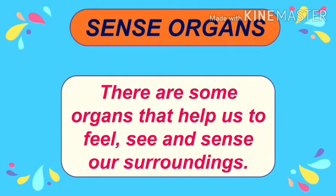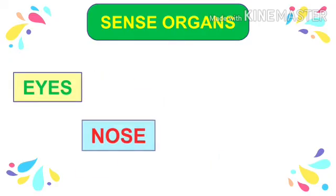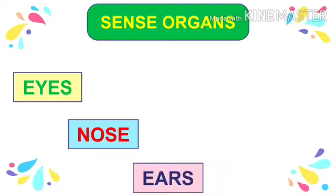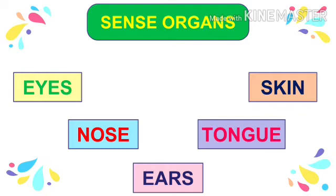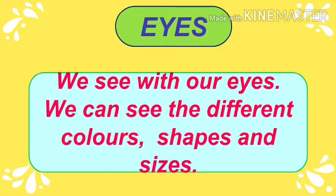There are some organs that help us to feel, see, and sense our surroundings. There are five sense organs and they are: eyes, nose, ears, tongue, and skin. Let us have a look at them one by one. The first sense organ is eyes — we see with our eyes and we can see different colors, shapes, and sizes.